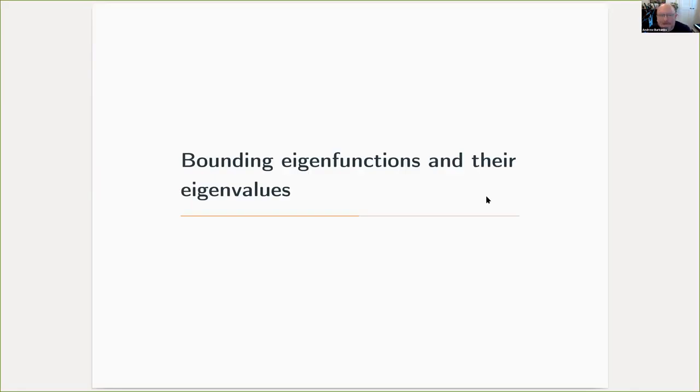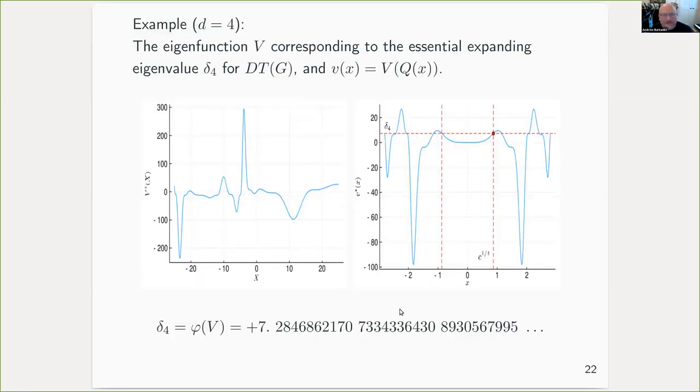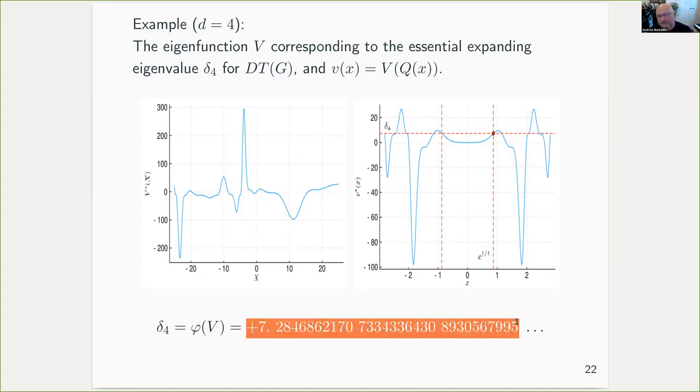The second application that we can use this technique for is in bounding eigenfunctions and their eigenvalues, in particular, this expanding eigenvalue delta. To do this, we just simply adapt the idea from the fixed point proof and we rewrite our eigenproblem as a root finding problem. And then the idea is to remove the eigenvalue from consideration by embedding it as one of the power series coefficients in the eigenfunction. Remember, eigenfunctions are only defined up to some normalization anyway, so we can take advantage of that spare degree of freedom and extract the eigenvalue by some linear coordinate function. So then we aim to solve what's now a nonlinear eigenproblem in V, and we can do that again by proving that the corresponding Newton operator is a contraction map around a suitable approximate fixed point of the Newton operator. And doing this gains us—this is just a sketch of what the eigenfunction happens to look like for the delta eigenfunction for degree four—and we gain bounds on the corresponding eigenvalue.